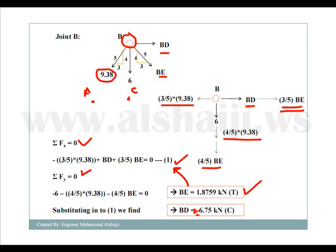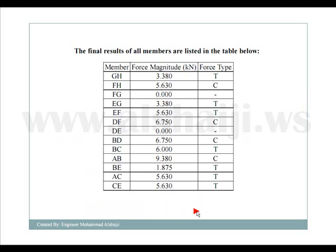To summarize my solution, the best way is to tabulate all the answers in this table, having the header of the table as member, force magnitude, and force type. The force type is, of course, T stands for tension and C stands for compression. Any zero member will have no tension or compression, like BDE and FG. And simply I just tabulate all the joints as shown in this table.